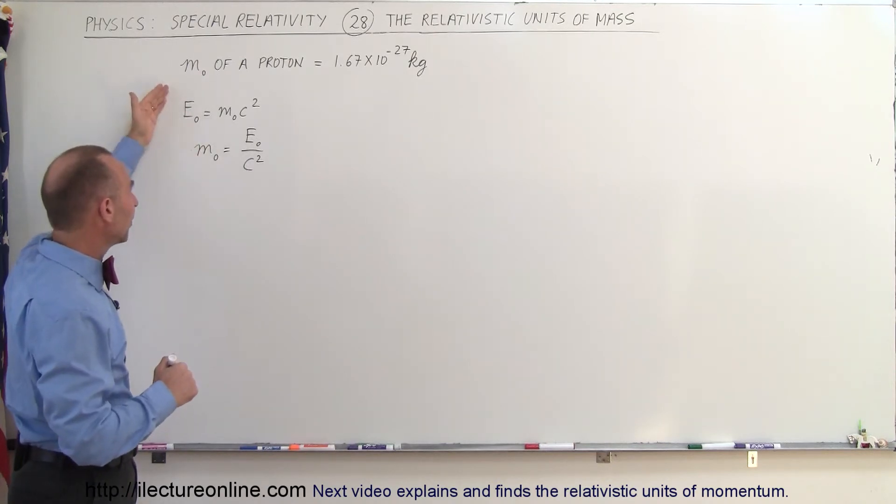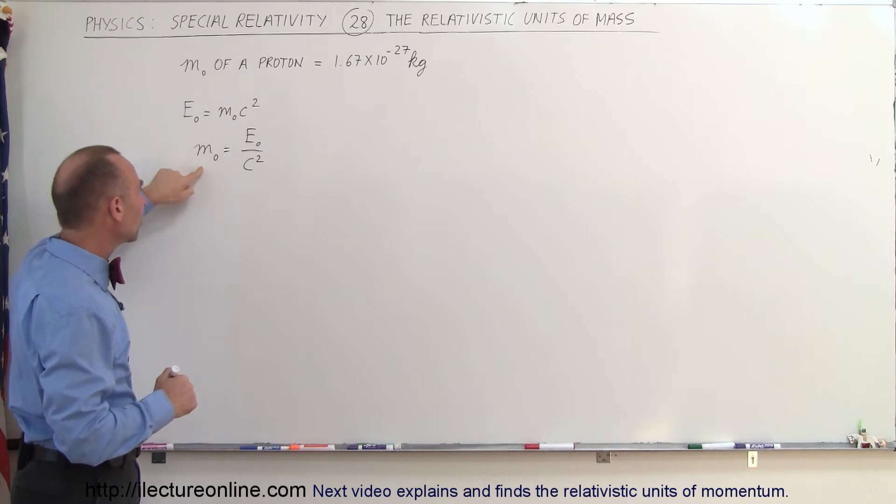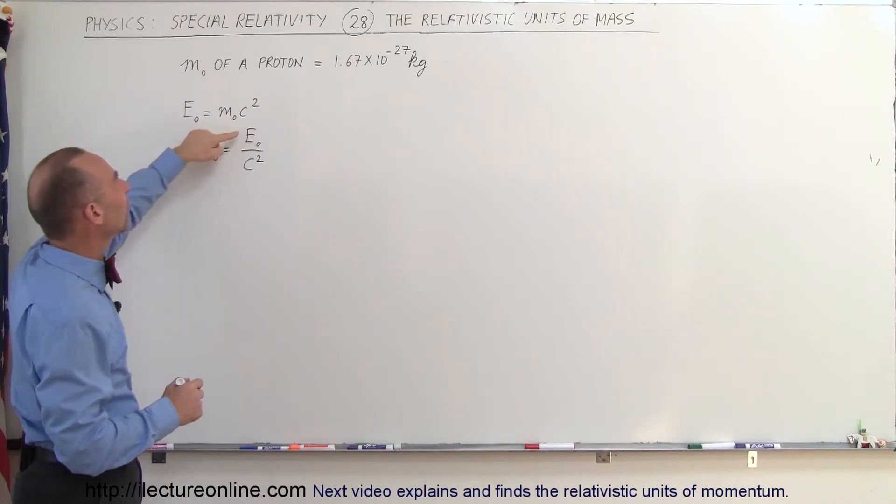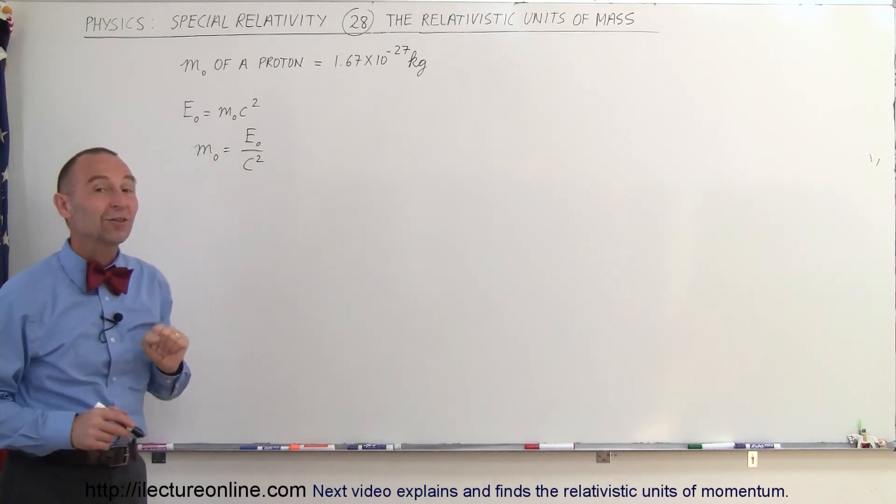So in terms of relativity, we can say that the rest mass is equal to the rest mass energy divided by the speed of light squared.